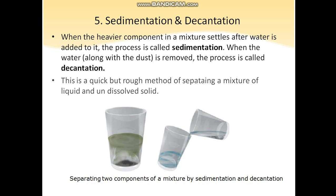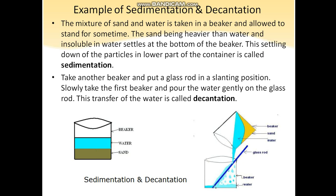In sedimentation and decantation, we first add water and after the heavier component settles down, the water is removed. For example, a mixture of sand and water is taken in a beaker and allowed to stand for some time. You will see that sand, being heavier, settles down at the bottom of the beaker. This is known as sedimentation.